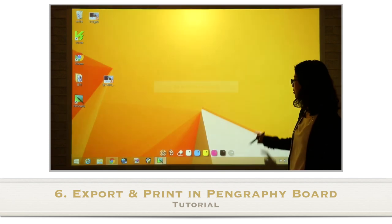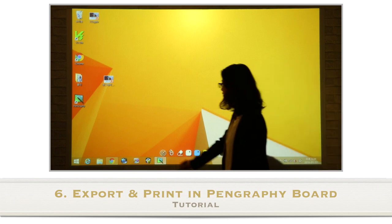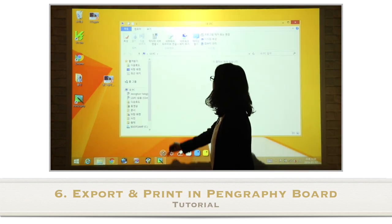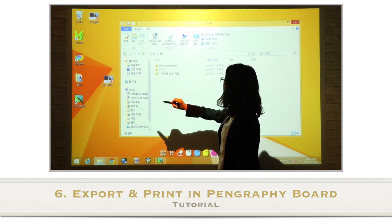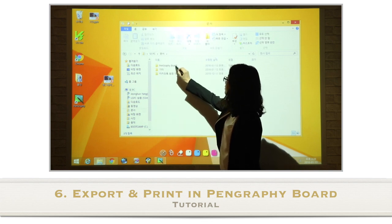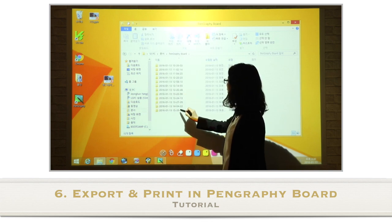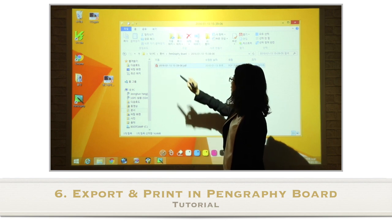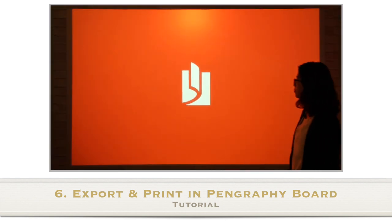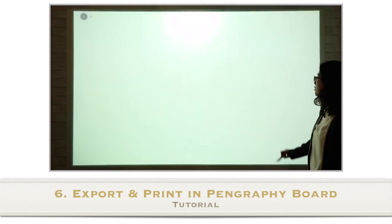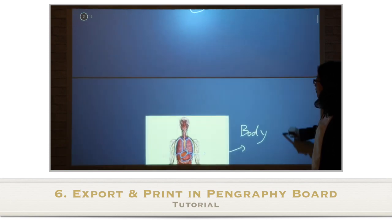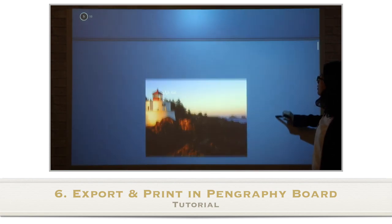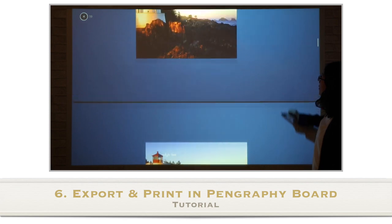You can find the saved PDF file by going through File Explorer, then Documents, and you will see the folder named PenGraphy. Inside the folder, you can see the saved files in time order. When you open the PDF file, you can see that all the information is saved well.